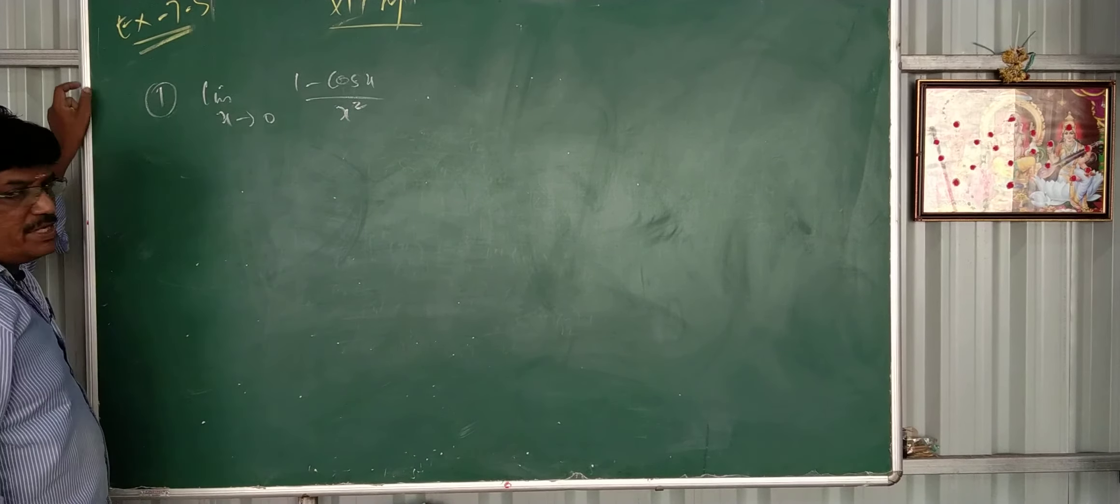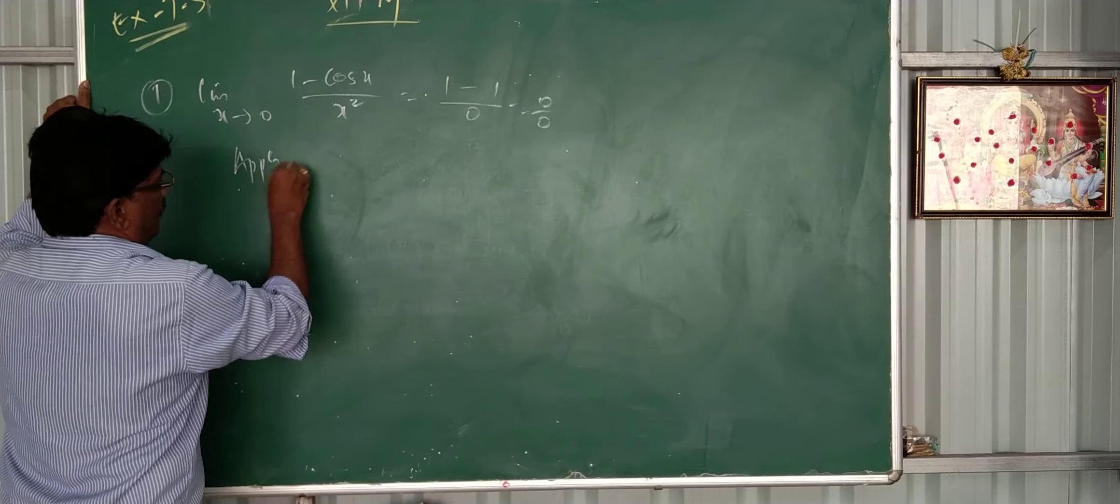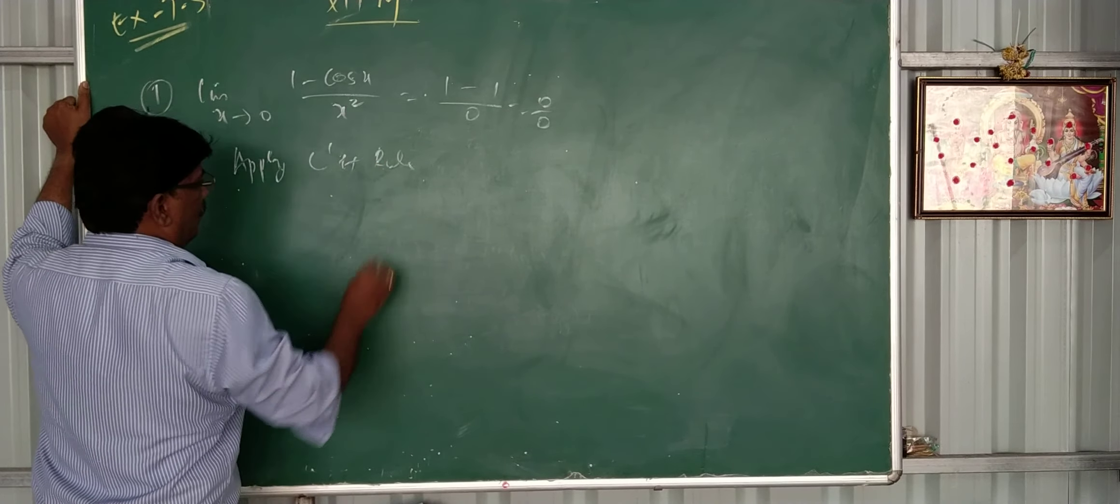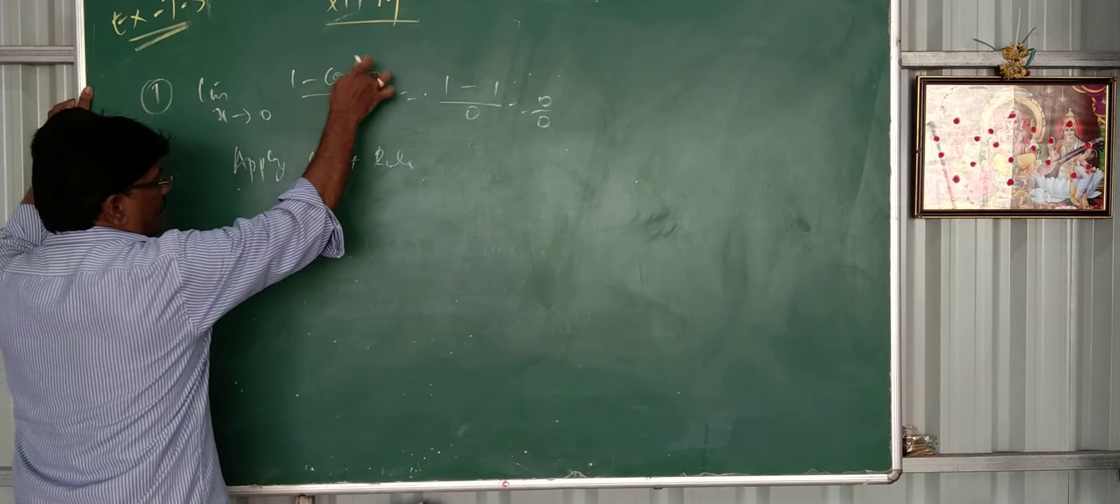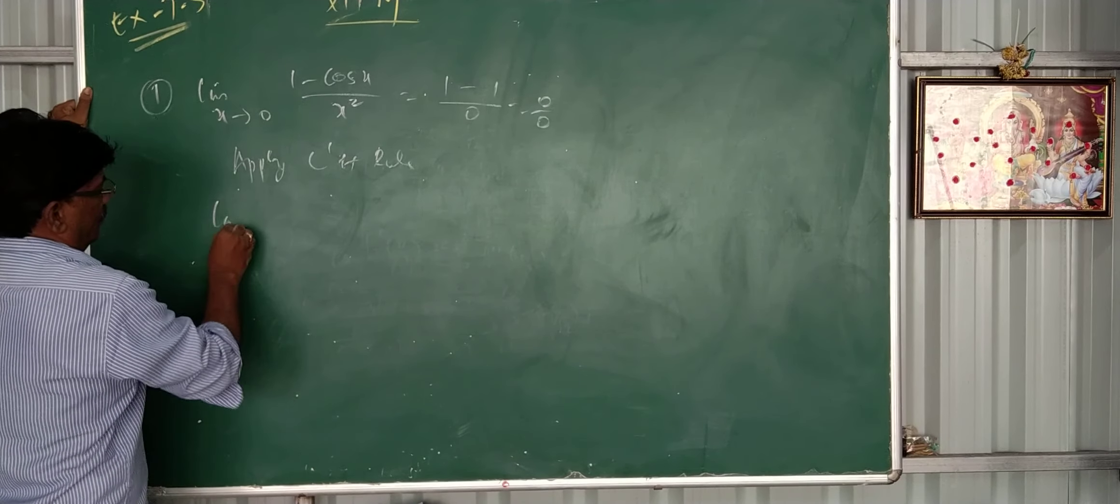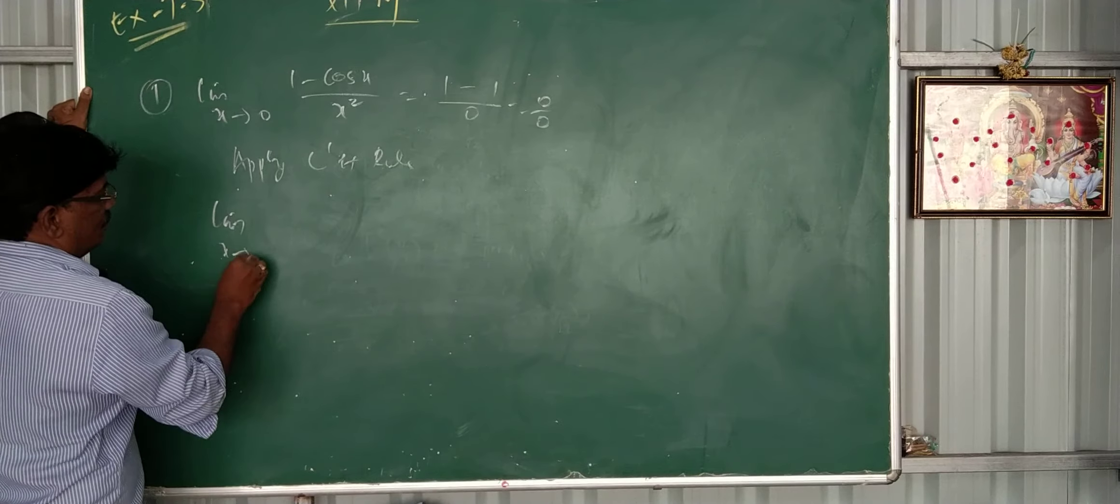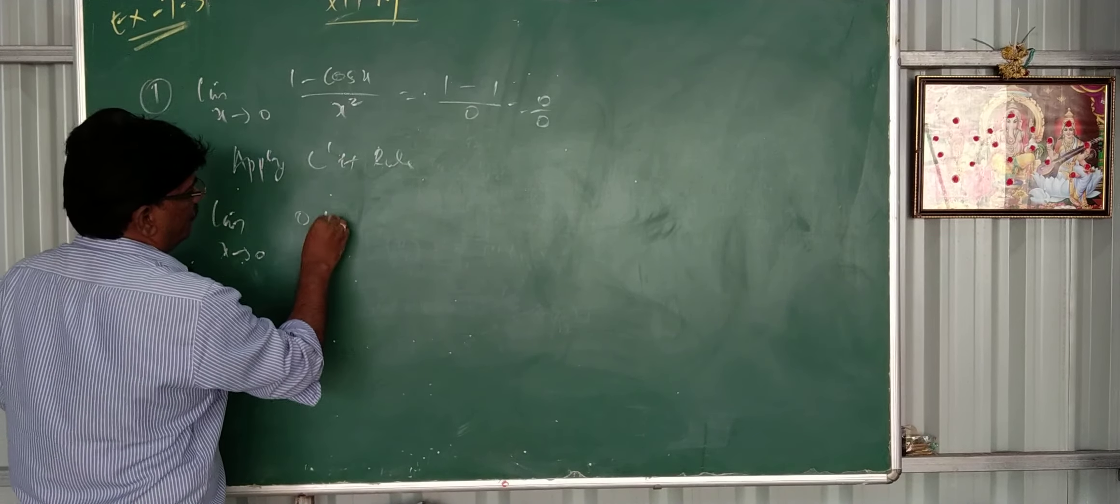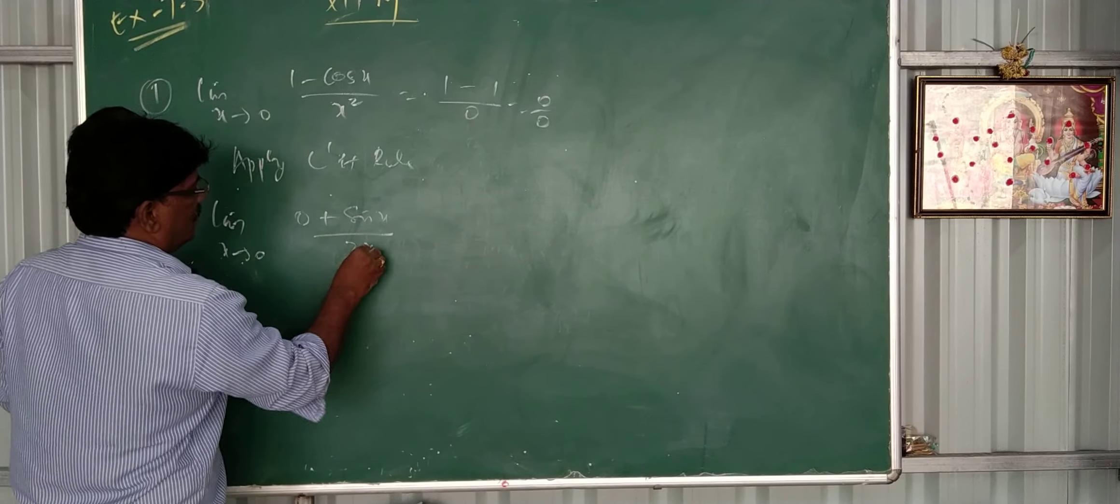Okay, now you have to apply L'Hôpital rule. I will apply L'Hôpital rule. That means differentiate separately. Limit X tends to 0, derivative of 1 minus cos X is sin X, X square upon 2X. So it will become sin X upon 2X.